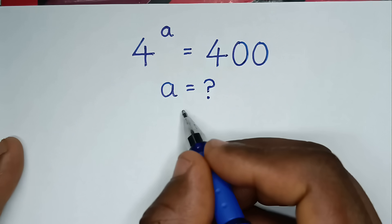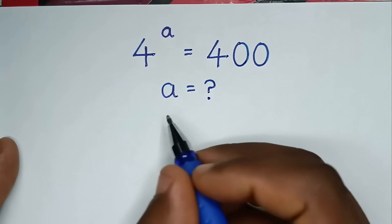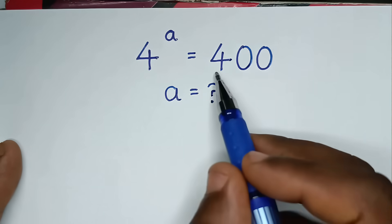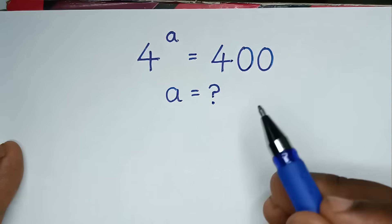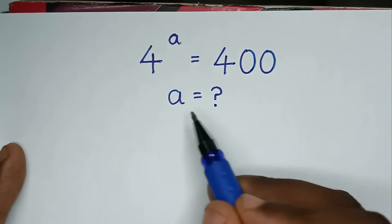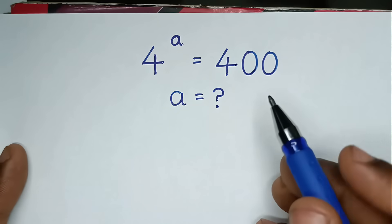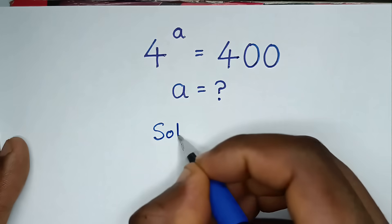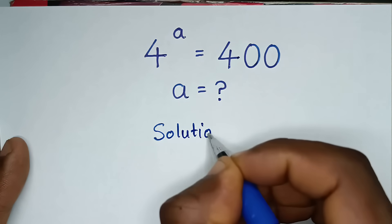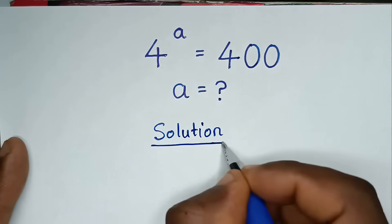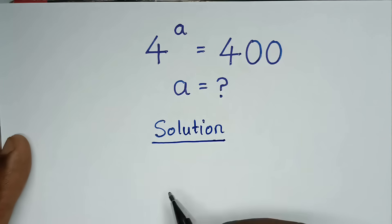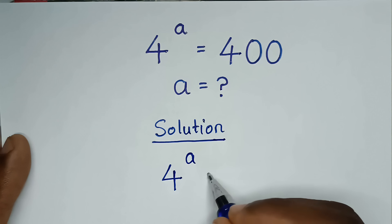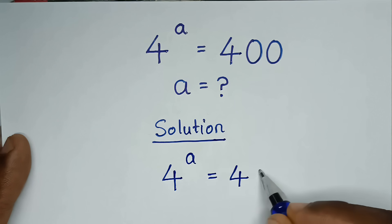Hello, you are welcome to solve this math problem which is 4 power of a is equal to 400, to find the value of a from this equation. Now, solution. From our problem, 4 power of a is equal to 400.